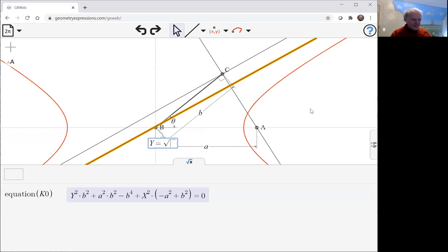square root of a squared minus b squared over b times x.